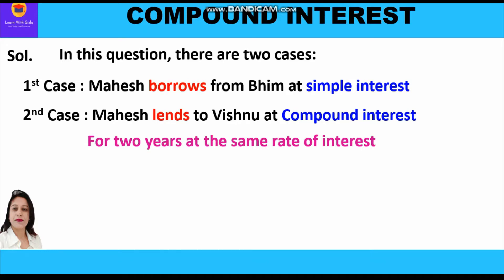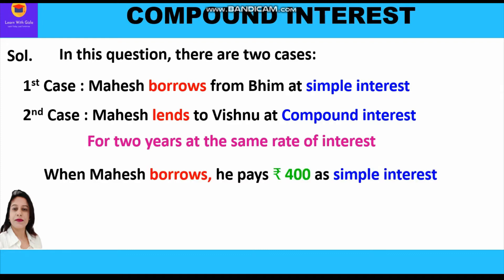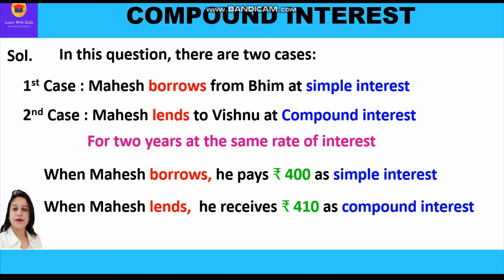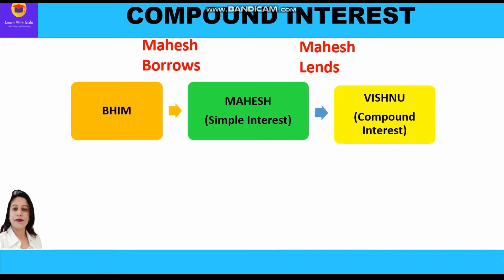When Mahesh is borrowing, he will pay rupees 400 as simple interest, and when Mahesh lends to Vishnu, he receives rupees 410 as compound interest from Vishnu. As you can see in the chart, Mahesh is borrowing from Bheem at simple interest.